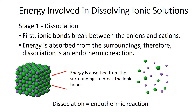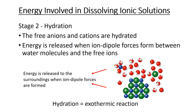When dissolving ionic substances, there are two stages. Stage one is dissociation, where the ionic bonds break between the anions and cations. Energy is absorbed from the surroundings to make those bonds break, so dissociation is an endothermic reaction. In stage two, hydration, those free anions and cations are hydrated, and energy is released when ion-dipole forces form between the water molecules and the free ions. As energy is released, it is an exothermic reaction.